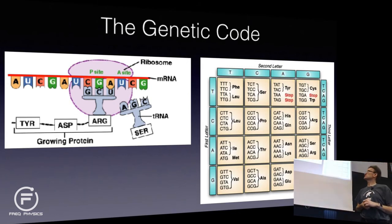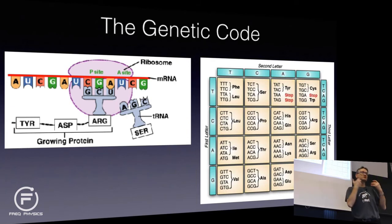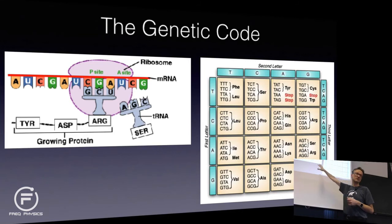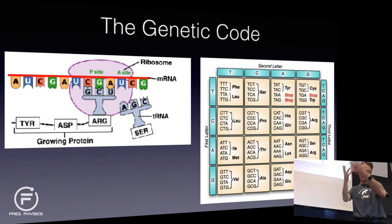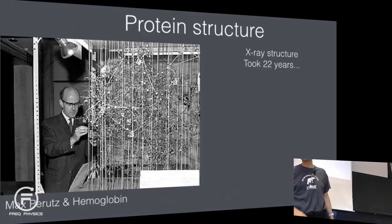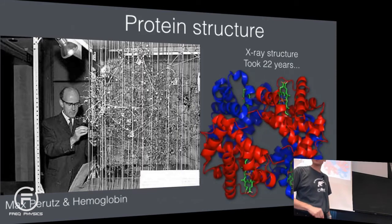Once we know what these building blocks are — discovered in the 1950s — the obvious question is: can't we just determine the structures of these proteins with X-ray crystallography? Because we know there should be a unique structure. If the structure is not unique, it's not going to have a unique function. So there must be a well-defined structure that only depends on these building blocks. If I just know the sequence of DNA, I can translate that using this code to the sequence of amino acids in the protein.